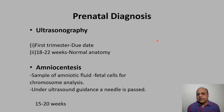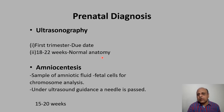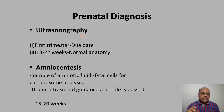Now we come to prenatal diagnosis — diagnostic techniques used before birth. First is ultrasonography. Normally, ultrasound is done twice during pregnancy: once in the first trimester to confirm the due date, and again between 18 to 22 weeks to confirm the normal anatomy of the baby. Ultrasonography tells us about fetal well-being and the due date of delivery.